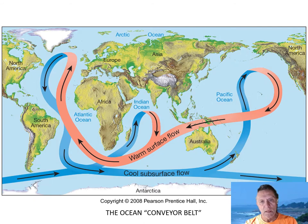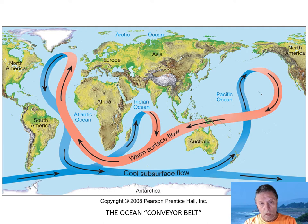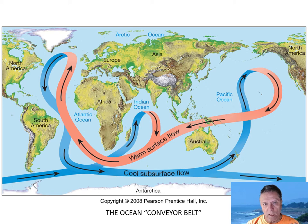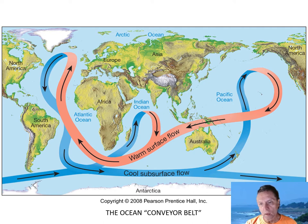The other part of ocean circulation is deep currents. Water moves deep in the ocean, and these deeper currents are driven primarily by temperature differences. Down here you see cool subsurface flow. Cooler water is denser and tends to sink, so from Antarctica and from the Arctic, cool water sinks and comes around in a huge global circulation pattern. As water from the Antarctic goes north, it gradually warms and becomes a warm surface current because warm water is less dense and rises closer to the surface.